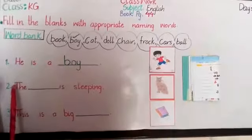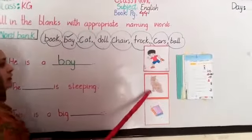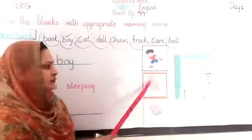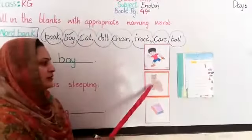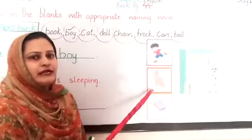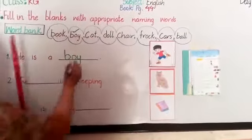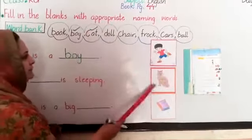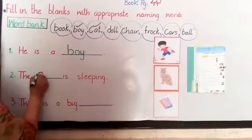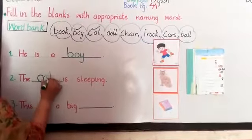Next, take here sentence. The dash is sleeping. What its appropriate name? Is picture ka Yeh jho Cheez Jho bhi ye picture hai. Iska appropriate naming word kya hai? Let's see. Book. Cat. Cat. It is cat. Its naming word is Cat. Yaha pe yaap kiya write karna hai. Cat. C-A-T Cat.